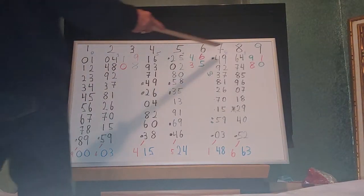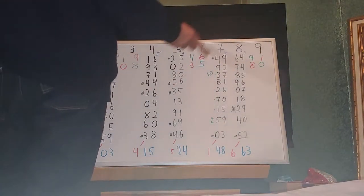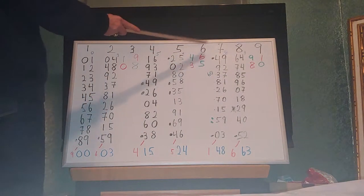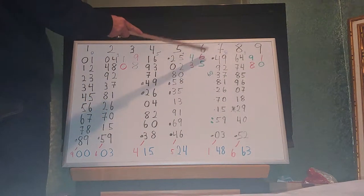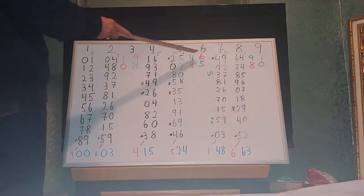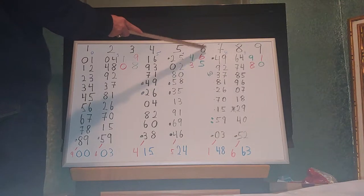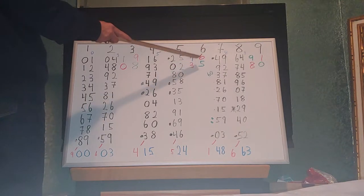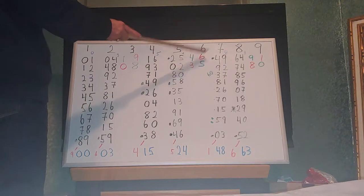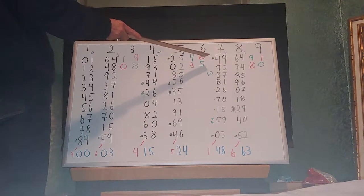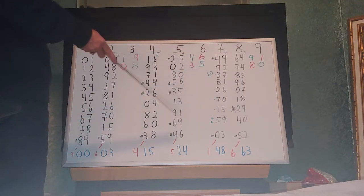6 squared is 36. 66 squared is 4,356. 666 squared is 443,556. Then it goes 4,444,3,5,555,6. Then 5 fours, 3, five 5s, 6. Then 10 fours, 1, 3, ten 5s, 1, 6.